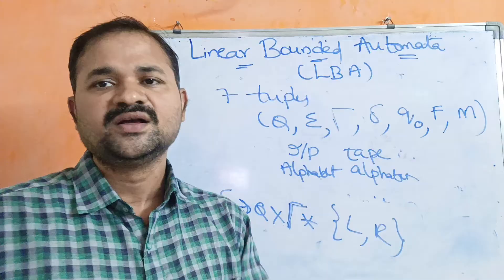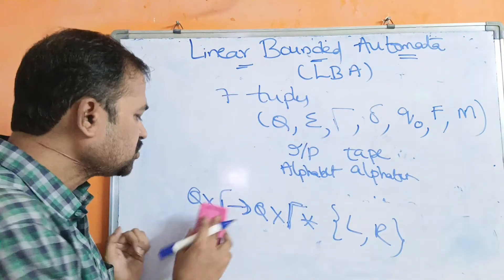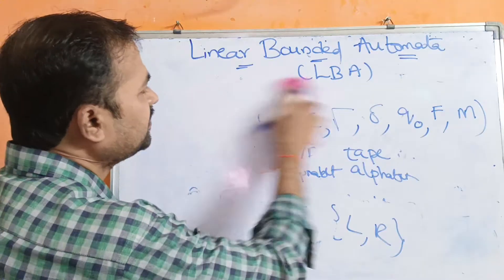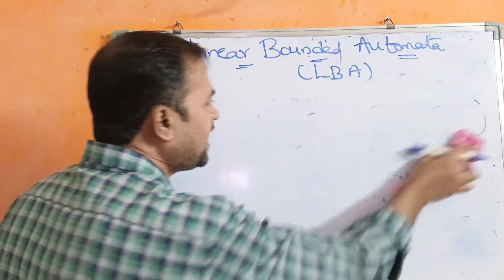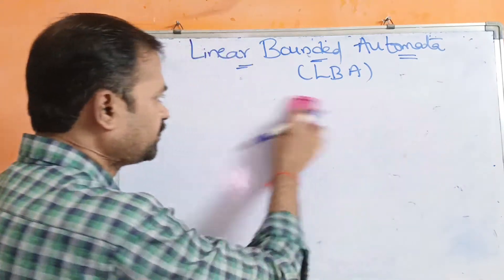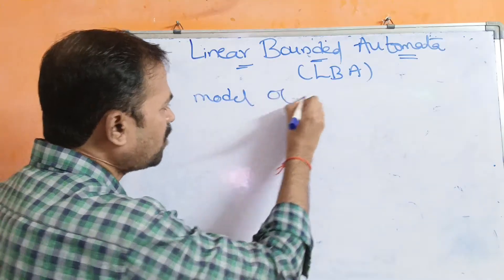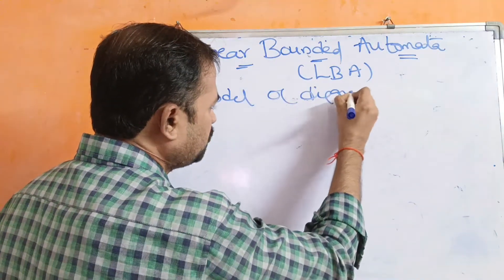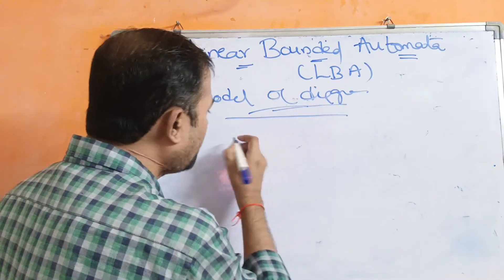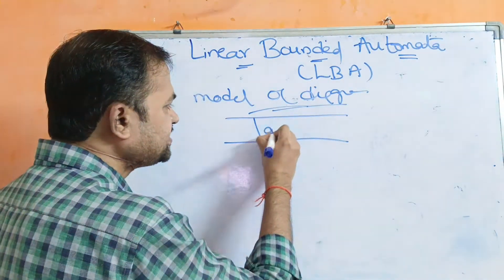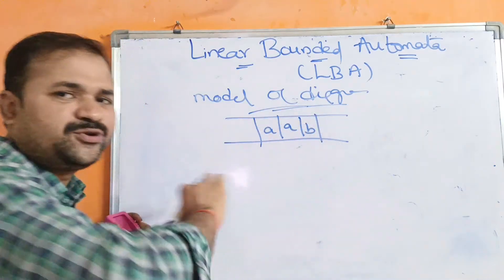The tape alphabet Γ contains input alphabet symbols as well as marker symbols. We have two types of markers: a left end marker and a right end marker. Before the input string we have the left end marker, and after the input string we have the right end marker.